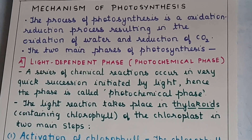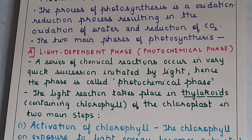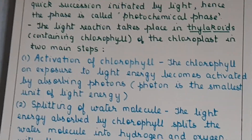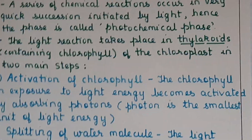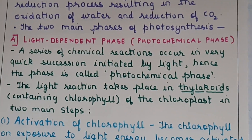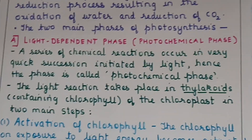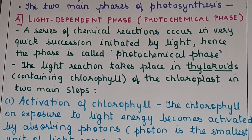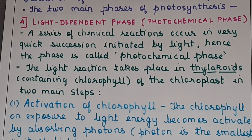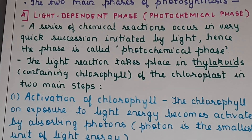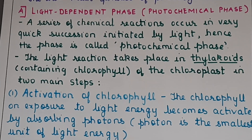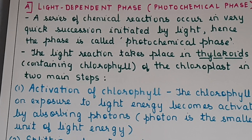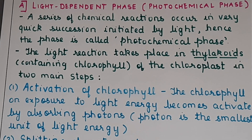Photosynthesis is an oxidation-reduction process which results in the oxidation of water and reduction of carbon dioxide. The two main phases of photosynthesis are: the light reaction or light-dependent reaction, also called the photochemical phase; and the light-independent reaction, also called the biosynthetic phase. The photochemical phase is so called because a series of chemical reactions occur in quick succession initiated by light, and it takes place in the thylakoids containing chlorophyll.